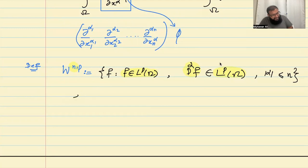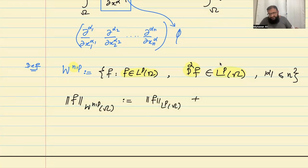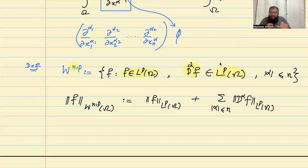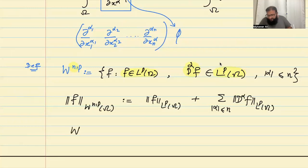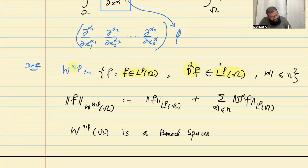I can define a norm on this space. The WNP norm of F over omega is the Lp norm of F over omega, plus the sum over all alpha with |alpha| ≤ n of the Lp norms of D^alpha F. You take all possible combinations of derivatives, sum their Lp norms, and add the Lp norm of F. This is how we define the norm on this Sobolev space, and WNP over omega is a Banach space.